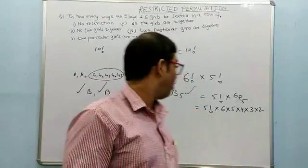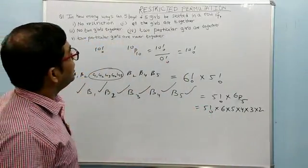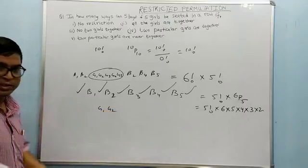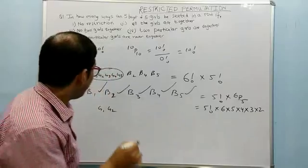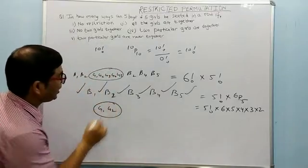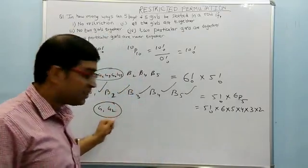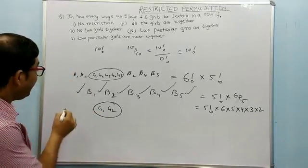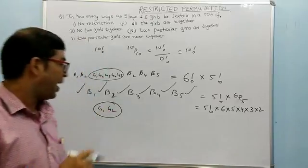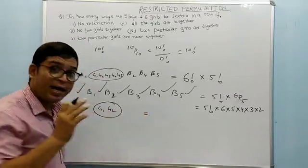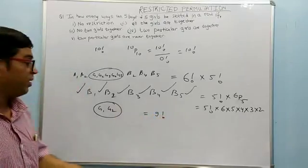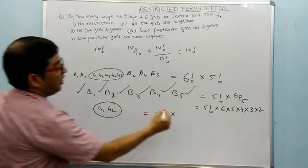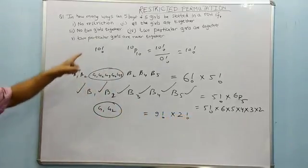Now, two particular girls — say G1 and G2 — are always together. We keep them in a bag using the string method. With two girls taken as one unit, there are now nine items (the remaining eight students plus the bag). These nine items can be arranged in 9 factorial ways. The two girls inside the bag can swap positions in 2 factorial ways. So the answer for two particular girls always together is 9 factorial multiplied by 2 factorial.